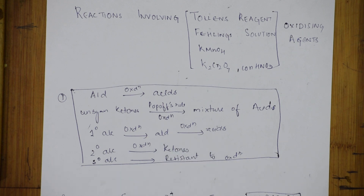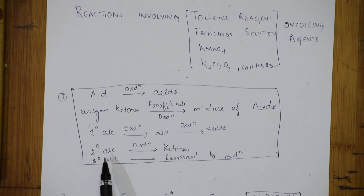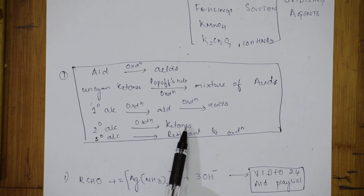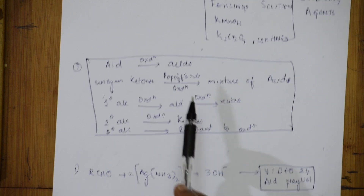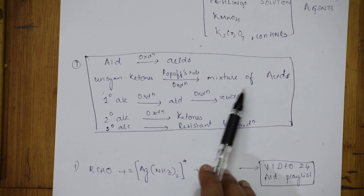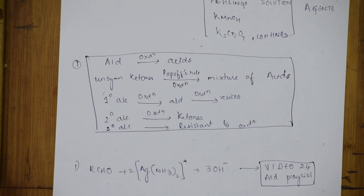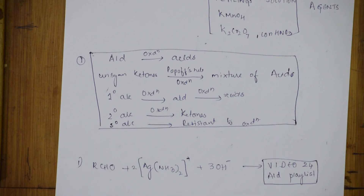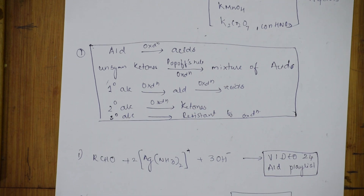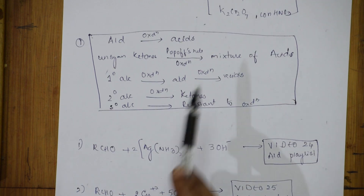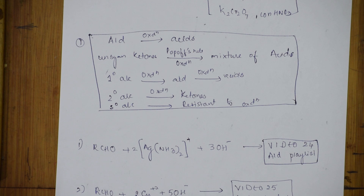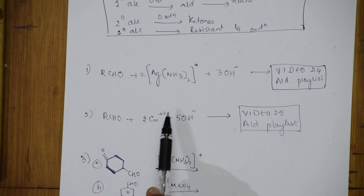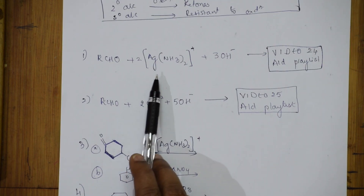Secondary alcohols on oxidation give ketones. As said, ketones resist oxidation, but according to Popoff's rule, they can give a mixture of acids. Tertiary alcohols are resistant to oxidation because there are no replaceable hydrogens. Remember this table — if you remember this, any type of reaction becomes easy.